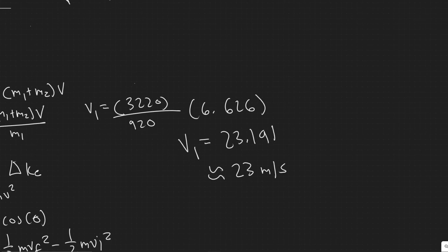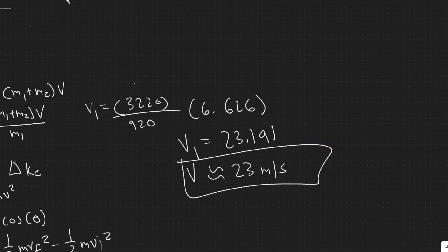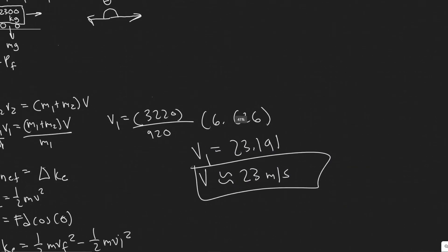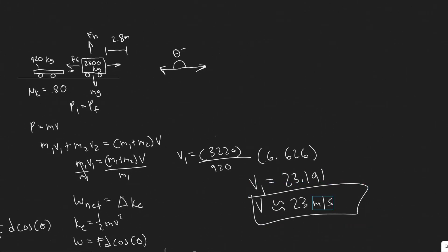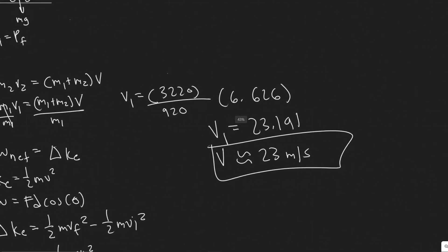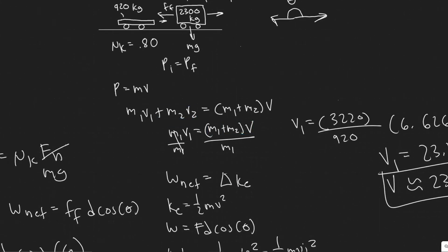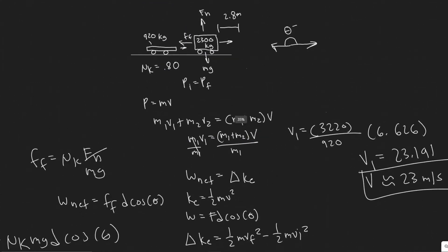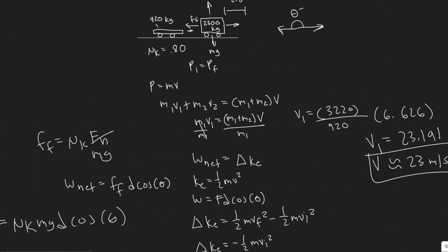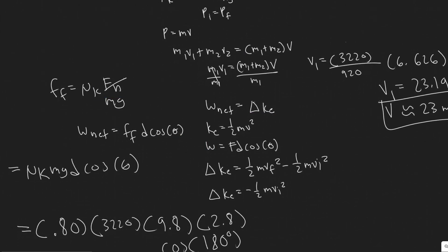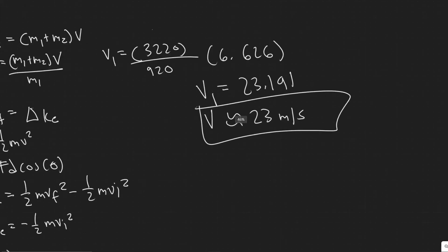You can round however you'd like, but essentially the velocity of the sports car at impact is about 23 meters per second. To summarize: we used the law of conservation of momentum to express V1 in terms of V (the velocity right after impact), then used the work-energy theorem to solve for V and plugged it back in. That's your answer.